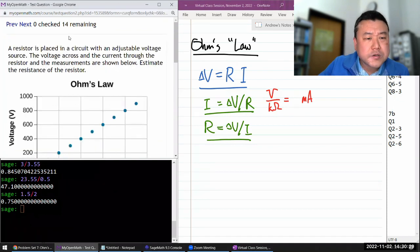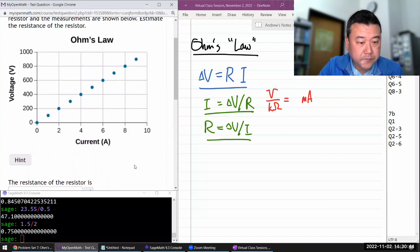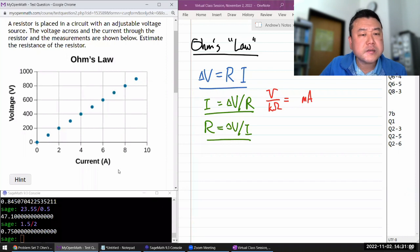Okay, next and the last question in this group. All right, so they're giving us some graphical information. They are asking for resistance and they are saying the voltage across and the current through the resistor and the measurement. Voltage is the y-axis, current is the x-axis.